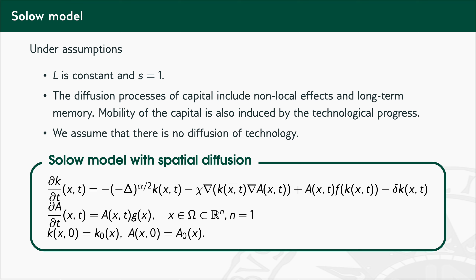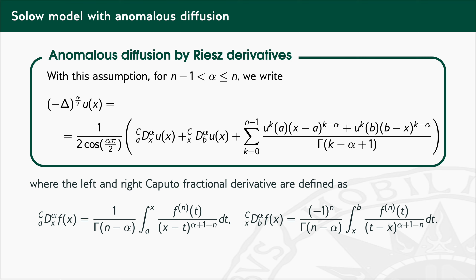The fractional Laplacian operator is represented by the following formula, where the two derivatives are the well-known left and right Caputo fractional derivatives, described as follows, along with a residual term given by the sum shown on screen.